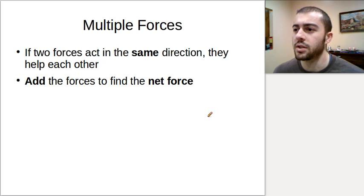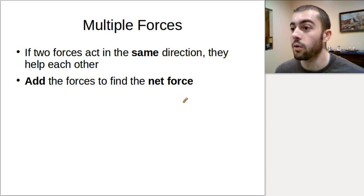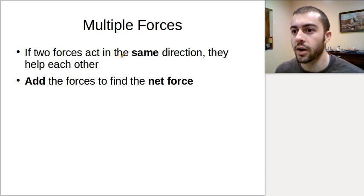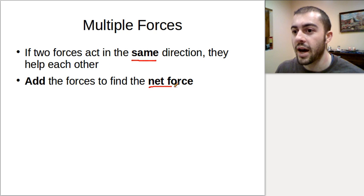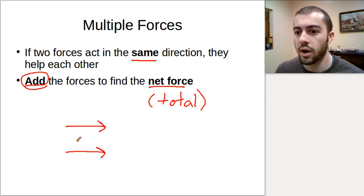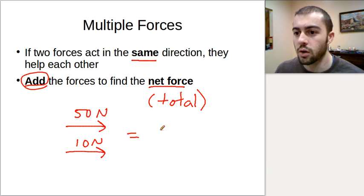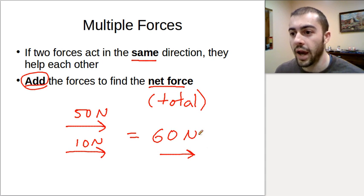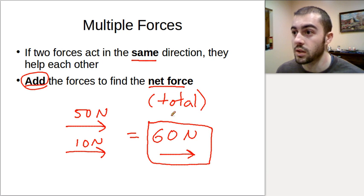How do we combine forces? If we have a situation when we have multiple forces, how do we combine those forces and see what our total force might be? When forces are acting in the same direction, they're going to help each other. To find the net force or the total force, we have to add them. So if we have one force going to the right at 10 newtons and another force going to the right at 50 newtons, our net force here would be 60 newtons to the right.